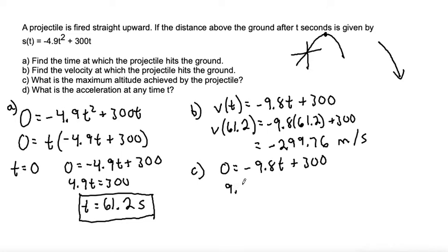Moving that over, we get 9.8 t equals 300. And 300 divided by 9.8 gives me t equals 30.6 seconds. That would be the time at which the maximum altitude is achieved, which makes sense that it would be half of the time when it hits the ground again.